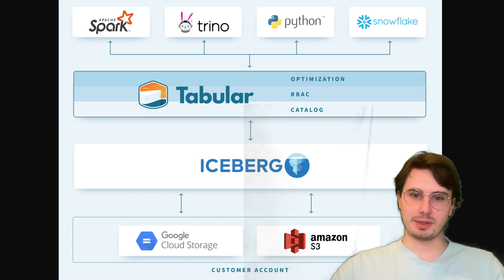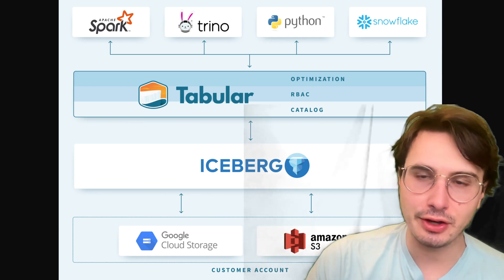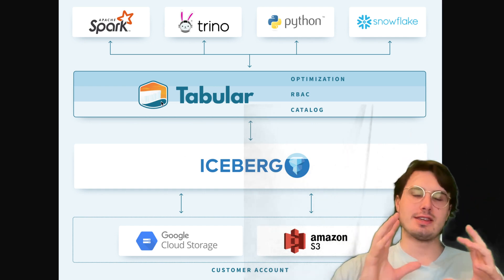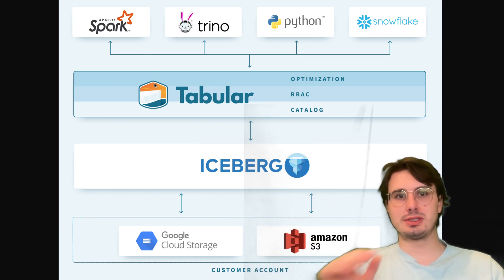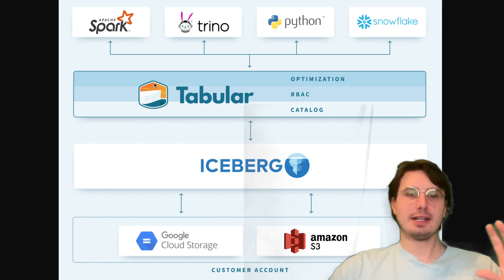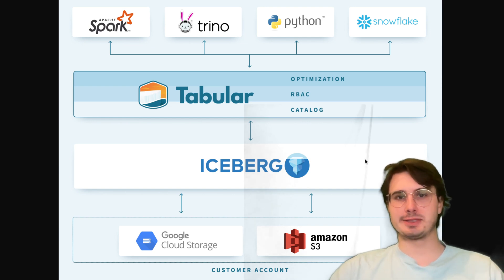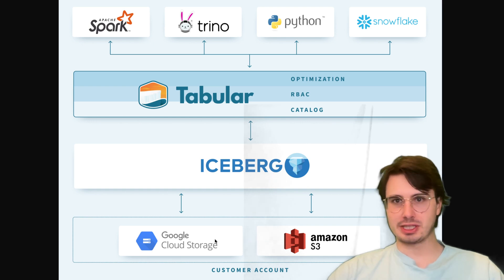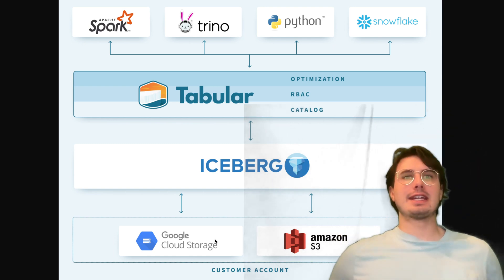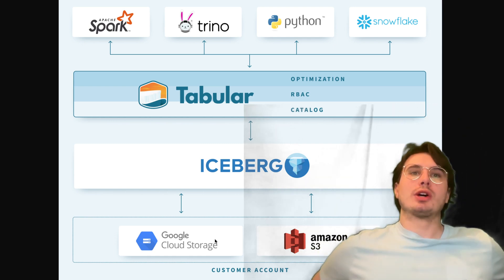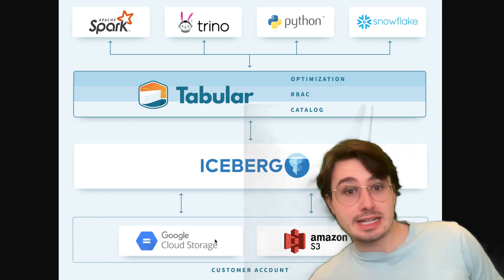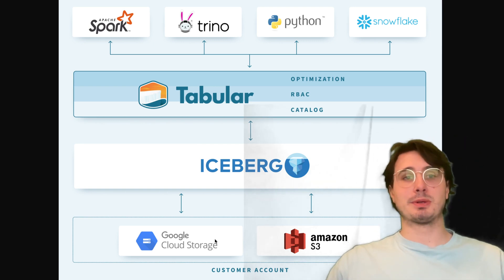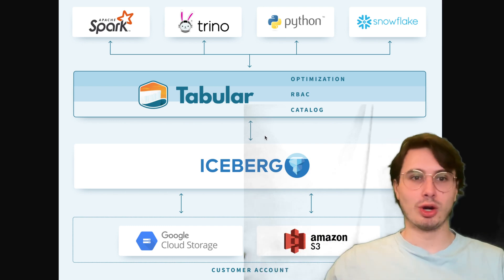The first category we're going to talk about is architecture and deployment strategy — how you want to design the location of your storage and your compute. The guiding principle here is to decouple storage and compute. Leverage the separation that Iceberg allows by storing your Iceberg tables in dirt-cheap cloud object stores like S3, Azure Data Lake, or Google Cloud Storage, while using query engines like Spark, Trino, Flink, or Snowflake to actually run and transform your data.